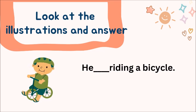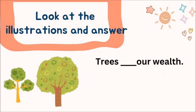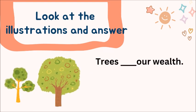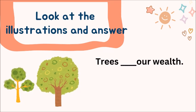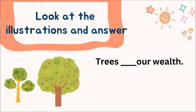Let's go to the third sentence. Children ___ playing badminton. Yes, the answer will be: are. Children are playing badminton. Trees ___ our wealth. The answer is: are.